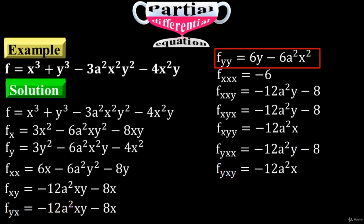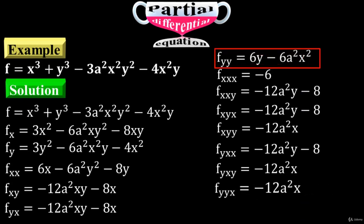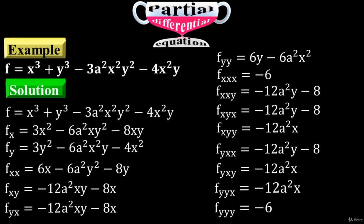Now take f sub yy and differentiate it with respect to x first — x variable is here — to have f sub yyx. Then differentiate it with respect to y — this is the term with the y variable — to have f sub yyy equals 6. Differentiation of f sub yy with respect to y is 6, and that completes the third order process.